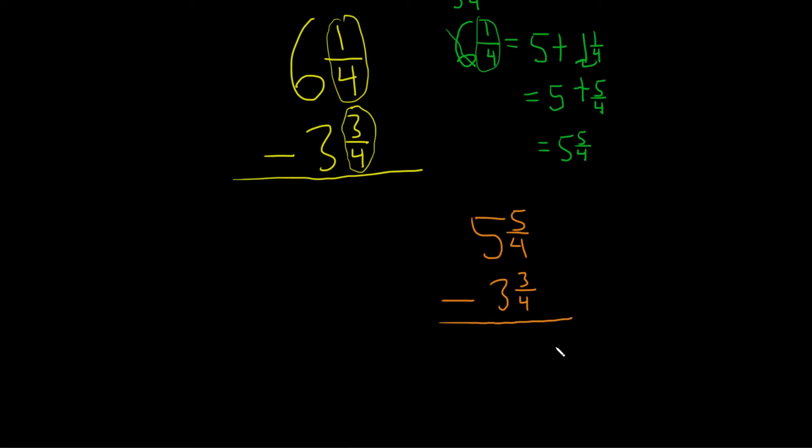All right, we're ready to subtract now. So now you just subtract the fractional parts. So 5 fourths minus 3 fourths is 2 fourths. Then you subtract the whole numbers. 5 minus 3 is 2.